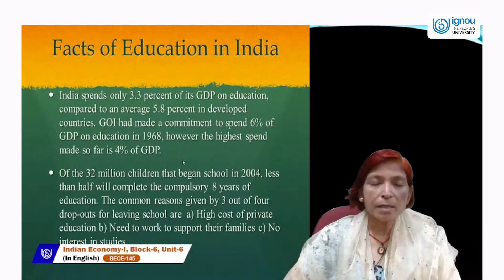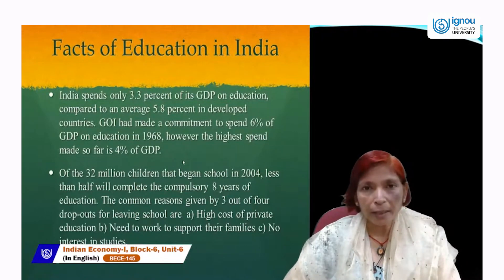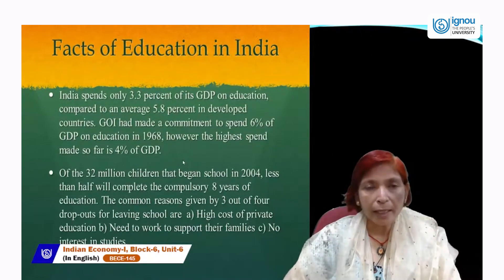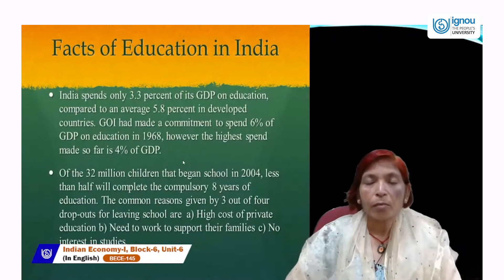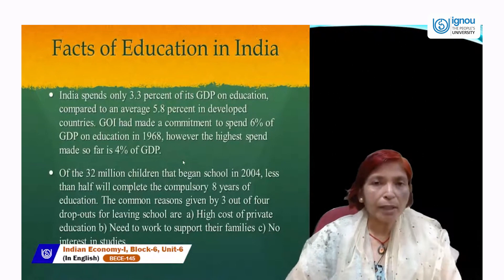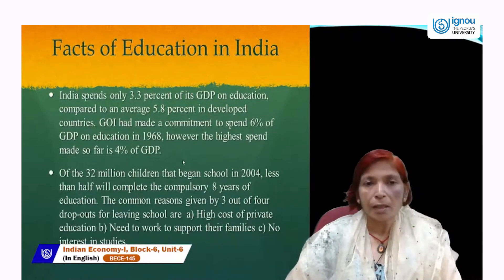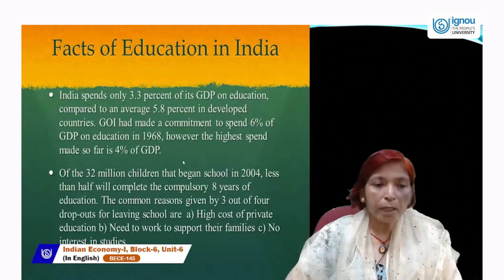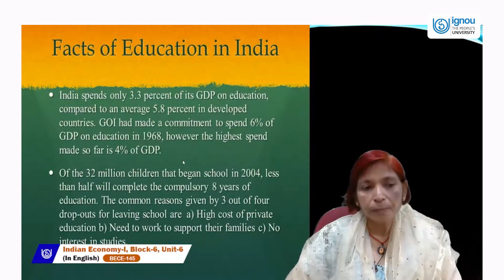Because the government made targets in 5-year planning but not achieved all targets fully — only partially. Of the 32 million children who began school in 2004, less than half will complete the compulsory 8 years of education. India should spend more money on education for the development of the country so that we can achieve a higher growth rate.